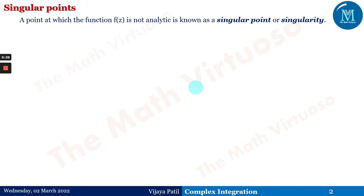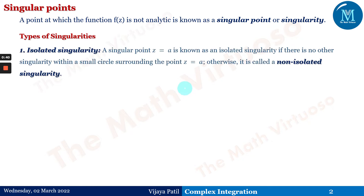A singular point is a point at which the function f(z) is not analytic — it is called a singular point or singularity. There are different types of singularities. First is isolated singularity: a singular point z = a is known as isolated singularity if there is no other singularity within a small circle surrounding the point z = a.